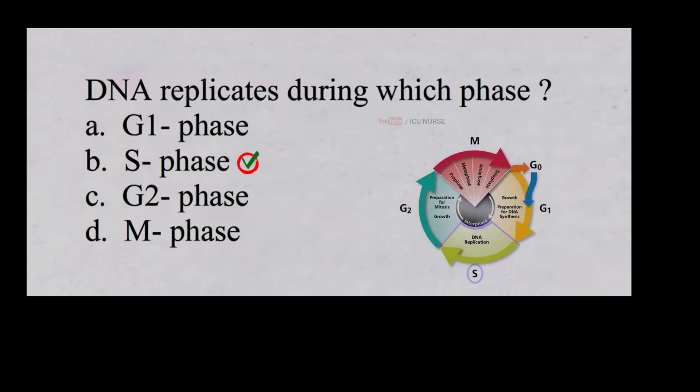DNA replication occurs during the S phase of the cell division cycle. The S phase is also called synthesis phase.